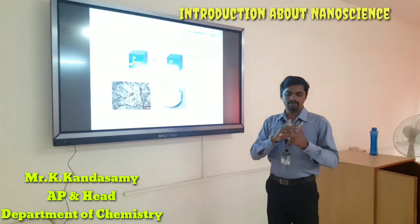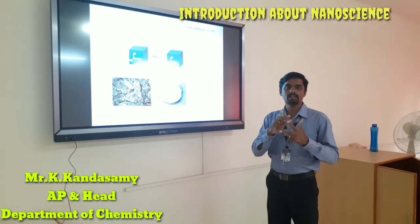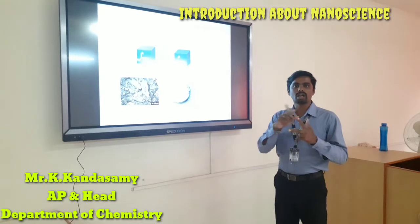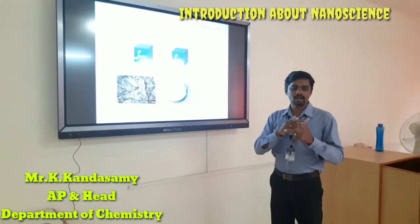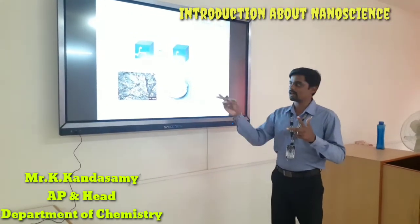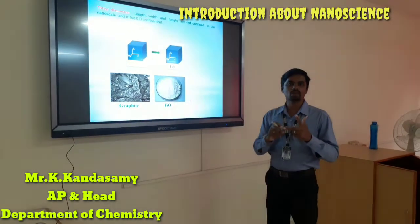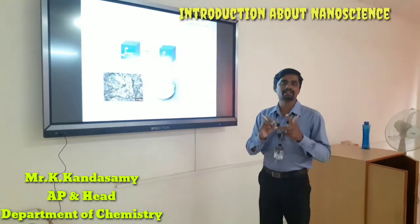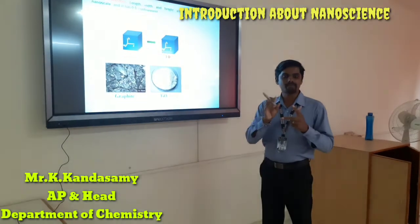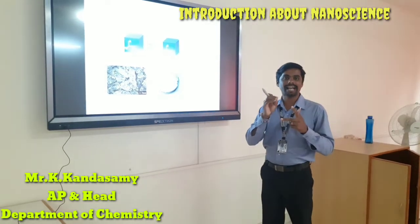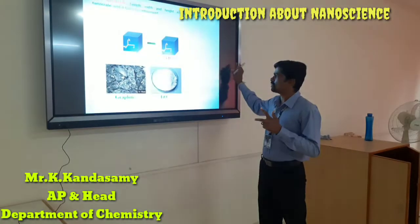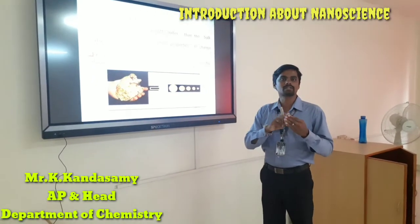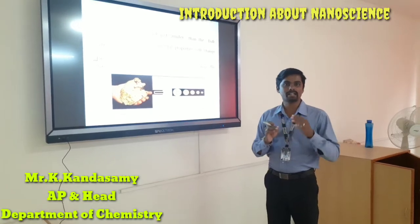And for three-dimensional — we have length, width, and height with no confinement in any dimension. These are called three-dimensional materials. So these are the types and classifications of nanomaterials. We have zero-dimensional, one-dimensional, two-dimensional, as well as three-dimensional — there are four classifications in nanomaterials.